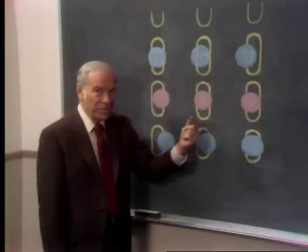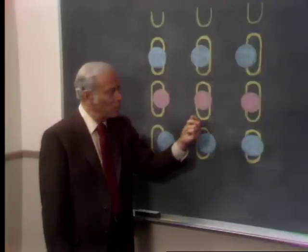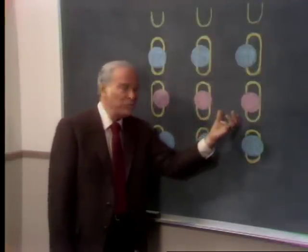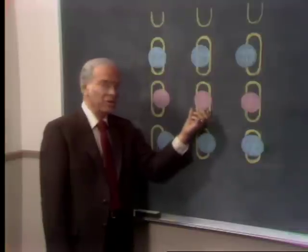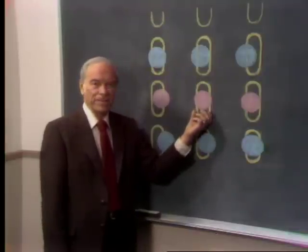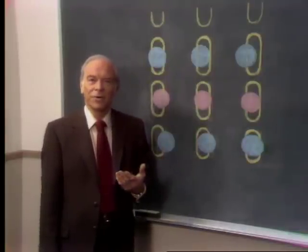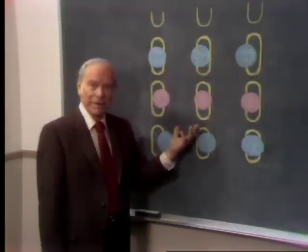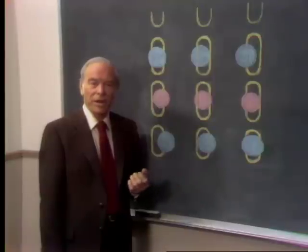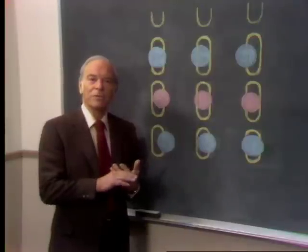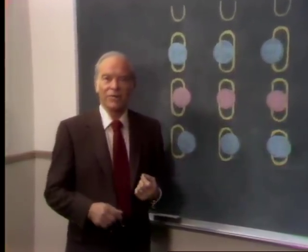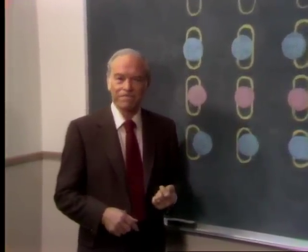That difference is sensed by a photo cell which adjusts the tracking mirror to bring it back on center. Wow and flutter in the disk is virtually eliminated in the same manner by the tangent mirror. All this happens automatically at 1800 revolutions per minute.